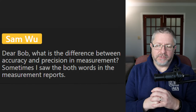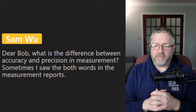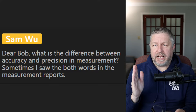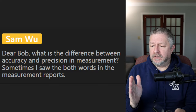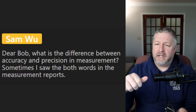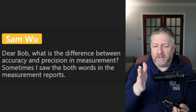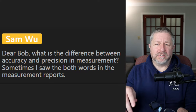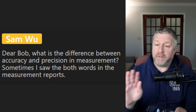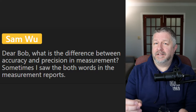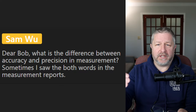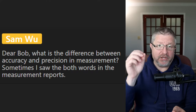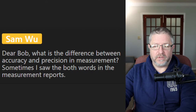Sam Wu asks about the difference between accuracy and precision in measurement. When you want to be precise or accurate, it means you're using a certified device to measure something — like a measuring tape that promises the measurements are correct. If someone says something needs to be three or four meters and I ask 'can you be more precise or more accurate?', it means can you go measure it and tell me exactly — maybe it needs to be six meters, four centimeters. Accuracy and precision are very much the same thing.